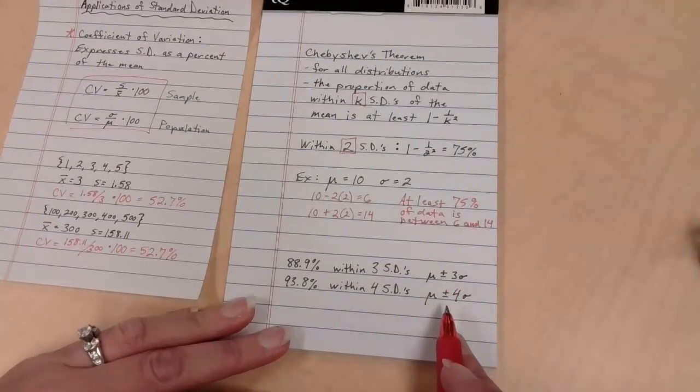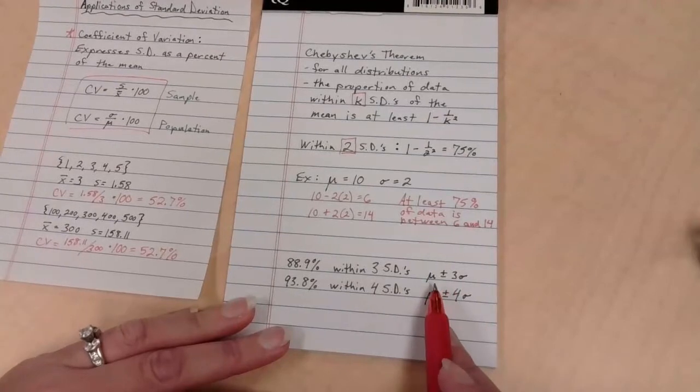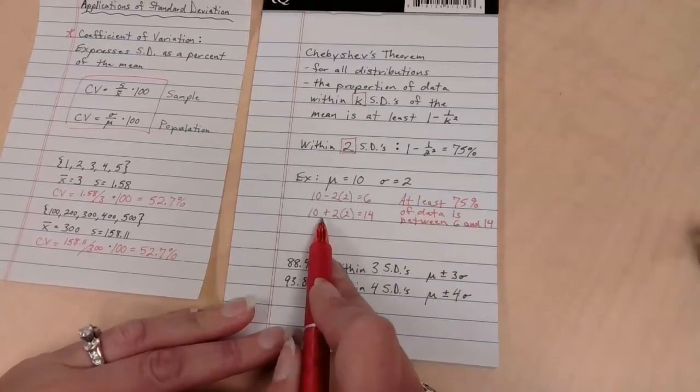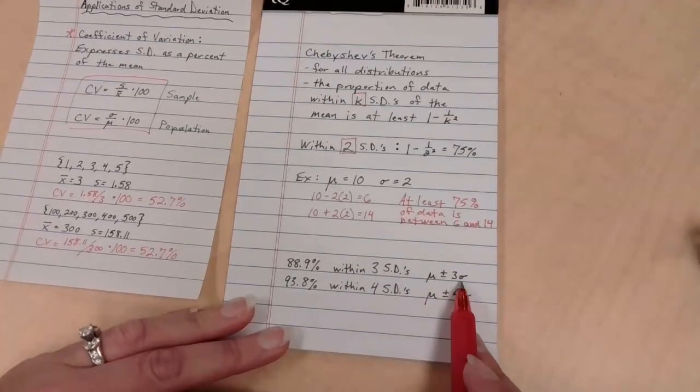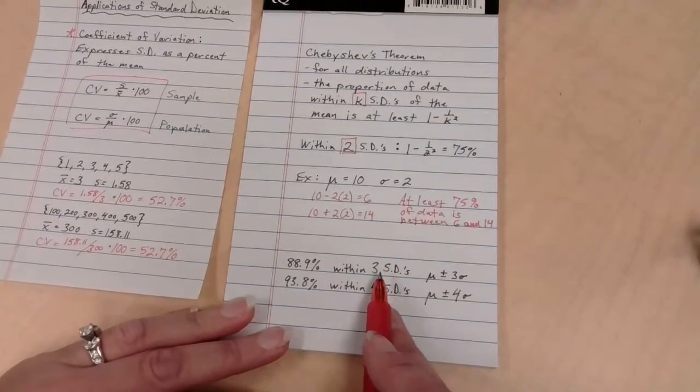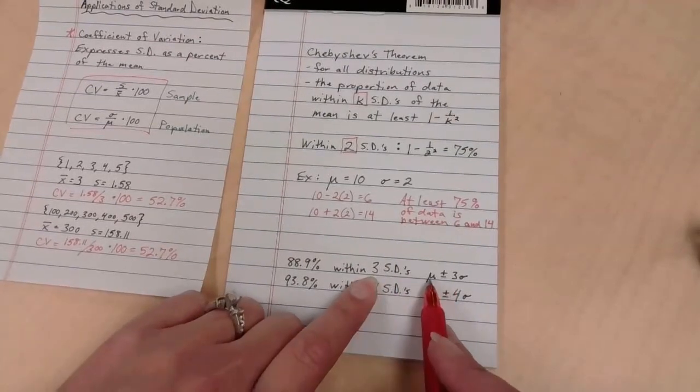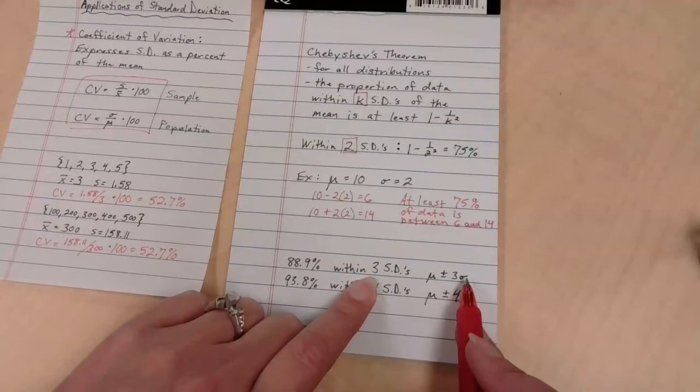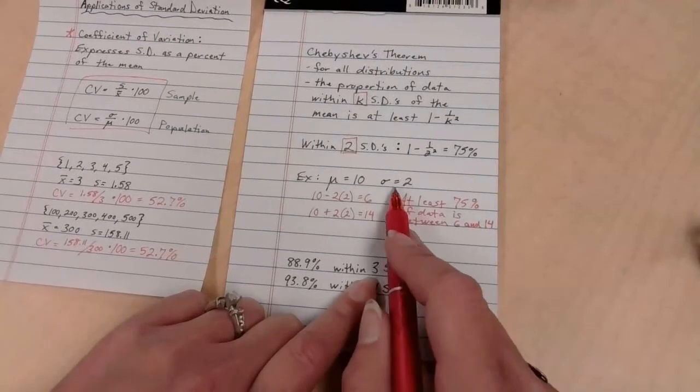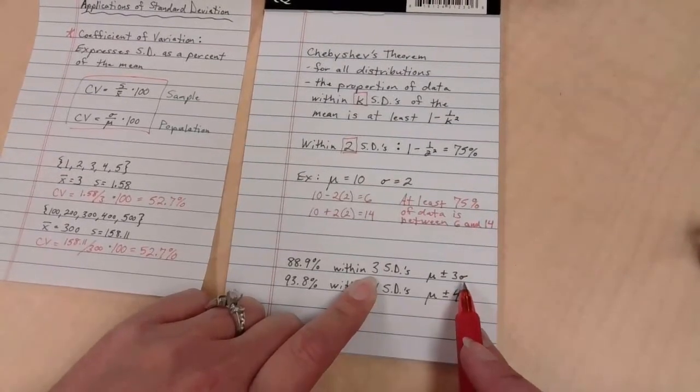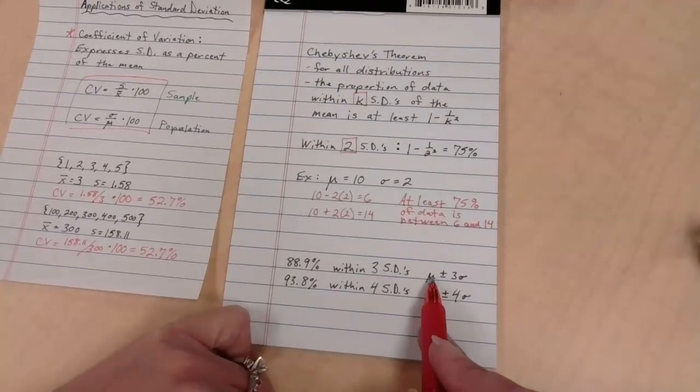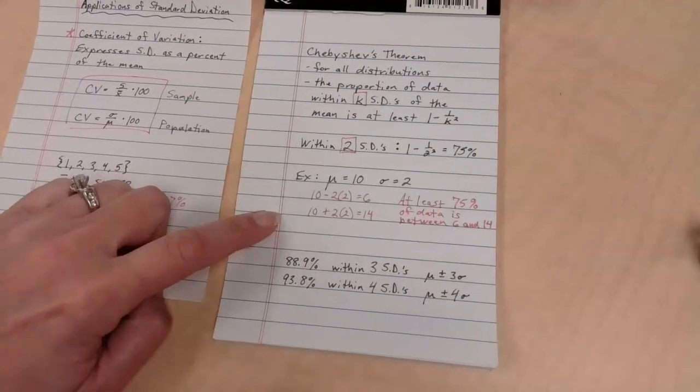This is mu plus or minus 3 sigma. This is my mean plus 3 standard deviations for the high end and then minus the standard deviations for the low end. If I wanted to stretch this data down right here, I'm going to go from 10 up 3 sets of 2, up 3 standard deviations, and down 3 sets of 2. It's going to be 6 up and 6 down, so it goes from 4 to 16. Between 4 and 16 would contain 88.9% of the data for this set.